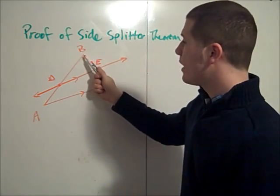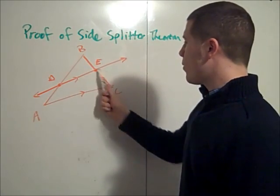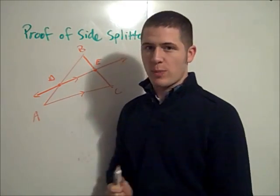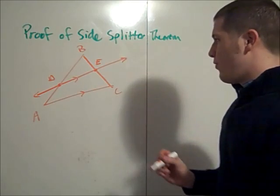Specifically we can conclude BD over DA is equal to BE over EC. That's only if we have this parallelism. So we're going to prove that.